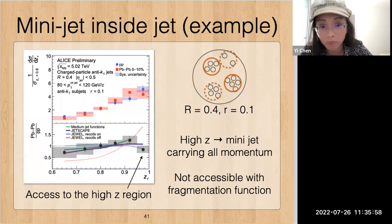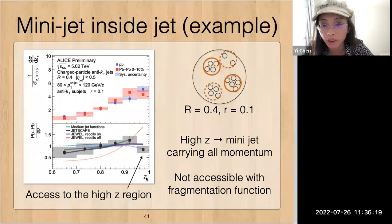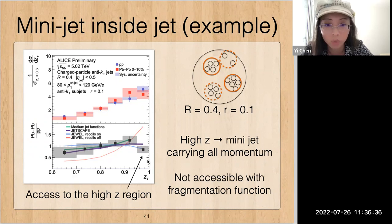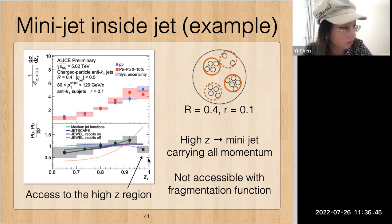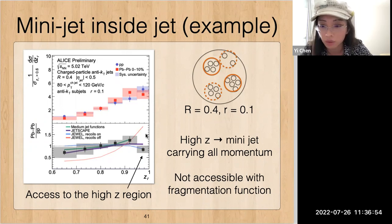Let us first look at an example where we cluster mini-jets inside of bigger jets. In this case, the bigger jet is with R = 0.4 and the mini-jets are done with R = 0.1. We measure the distribution of momentum fraction carried by the mini-jets. Z = 1 means all the momentum of the big jet is carried by one mini-jet; Z = 0.7 means 70% is carried by a mini-jet. This approach gives access to the high-z region where all the jet momentum is concentrated in a small area — not accessible with the single-particle fragmentation function. By looking at these mini-jets, we can gain extra information in addition to the more traditional fragmentation function.